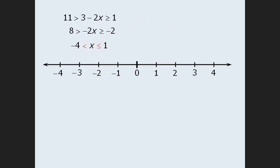To show this on our number line, we will examine the inequality in two parts. First, we have negative 4 is less than x, which is the same as x is greater than negative 4. We'll draw a circle around negative 4 and then draw an arrow to the right. Next, we have x is less than or equal to 1. We'll add a dot at 1 and then draw an arrow to the left. So the entire set of solutions consists of all values of x greater than negative 4 and less than or equal to 1.